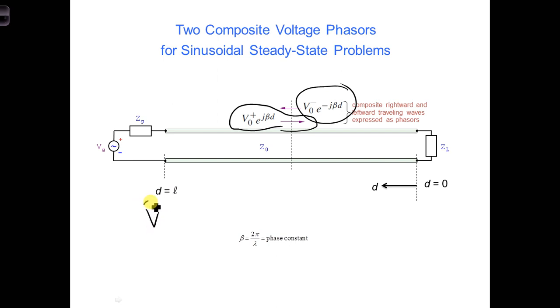So the total voltage phasor on the transmission line, in general, is equal to V0 plus E to the J beta D, which we've dealt with so far, and also all the reflected waves: V0 minus E to the minus J beta D.